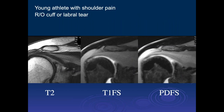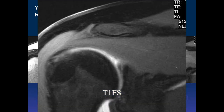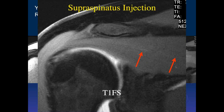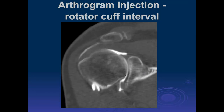Here's a young athlete with shoulder pain. On the T2 there's increased signal throughout the supraspinatus muscle. On the T1 fat sat arthrogram there's bright signal in the joint; there's also possibly some increased signal within the supraspinatus that could just be contrast. This is actually a supraspinatus injection.